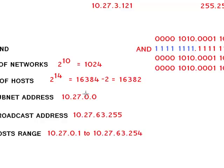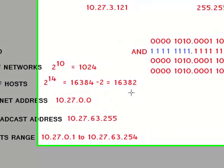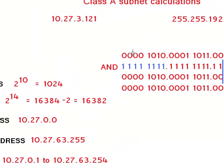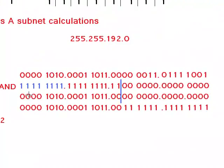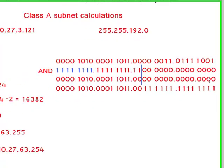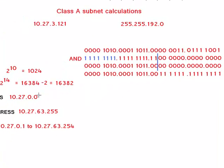To find our subnet address, we have to do AND operation between the IP address and subnet mask. The result is here. When you convert to decimal, this is the address.